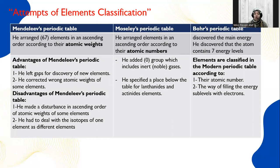The advantages of Mendeleev's periodic table: Number one, he left gaps for the discovery of new elements — Mendeleev predicted that scientists after him would discover new elements, so he left gaps in his periodic table. Two, he corrected the wrong atomic weights of some elements. The disadvantages: Number one, he made a disturbance in the ascending order of the atomic weights of some elements when classifying them by properties. Two, he had to deal with the isotopes of one element as different elements.